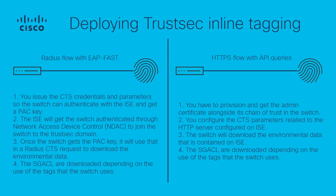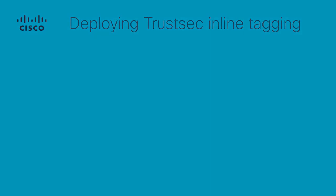Under this scheme, to fetch data from ISE, the switch is capable of performing API queries directly through ISE to allocate the CTS information for segmentation and enforcement. Accordingly, using the admin certificate of the PAN node ensures a secure connection through HTTPS. Let's review the configuration required.